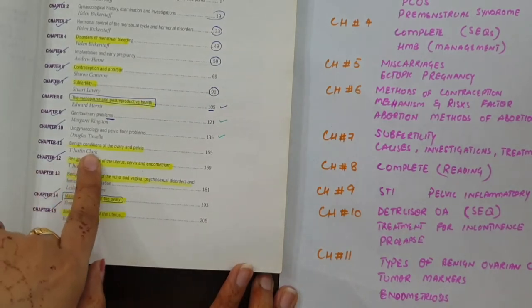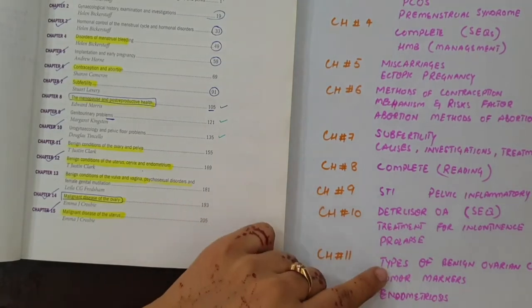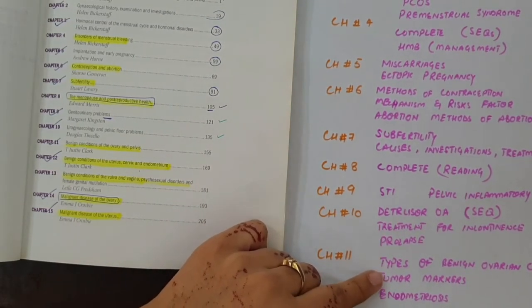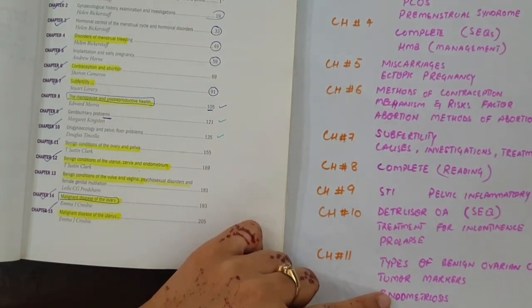Then comes the 11th chapter. The 11th chapter is benign conditions of the ovary and pelvis. In this there are more ovarian tumors, benign ovarian tumors, tumor markers and endometriosis. Endometriosis causes, endometriosis management, endometriosis history and treatment are important.